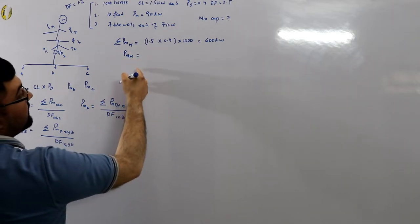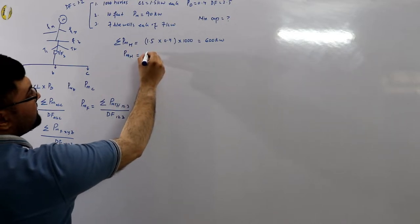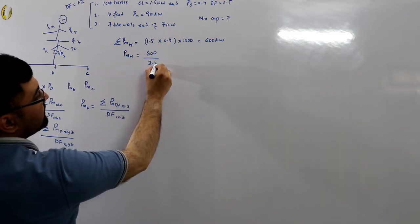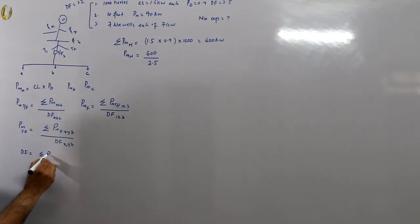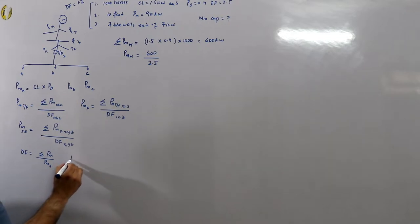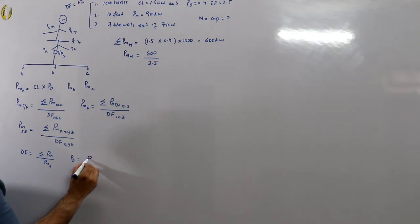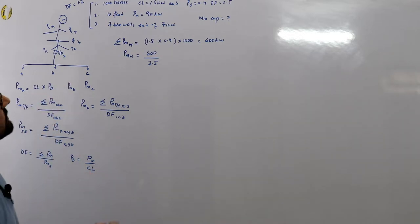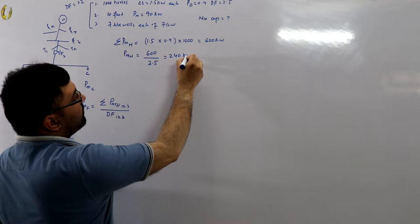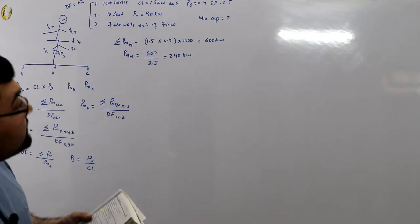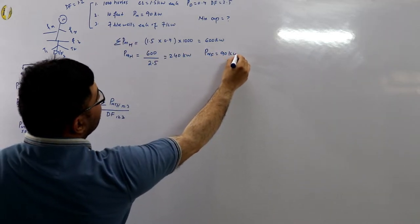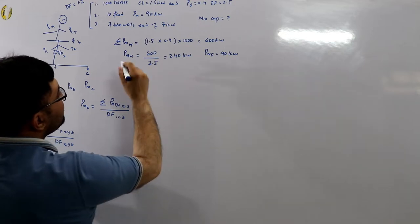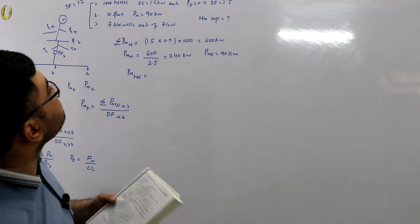The average maximum demand of the houses is 600 divided by the diversity factor 2.5, which gives 240 kilowatts. The maximum demand of the factories is already given as 90 kilowatts. For the tube wells, 7 kilowatts each and all operating simultaneously, so diversity factor is 1 — connected load is taken as maximum demand — giving 7 × 7 = 49 kilowatts.